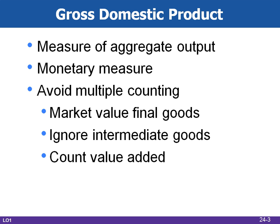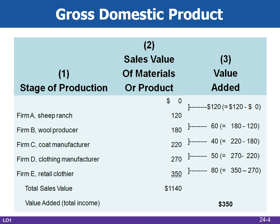Second-hand sales are also excluded because they do not represent current output. Here's an example of the value added model in a five-stage production process. The value added is calculated as the difference between the sales value of the materials and the value of the good at the previous production stage, and using this method is another way of avoiding multiple counting.